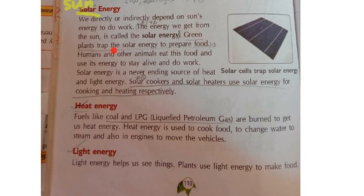Green plants trap the solar energy to prepare food. All the green plants will need the sun's energy for preparing food. Without sunlight, can they prepare food? No. Humans and other animals eat this food and use its energy to stay alive and do work. We need energy means what we should do? We should eat the food. What food will we be eating? All the leafy vegetables or vegetables - anything we eat, they come from the plants. So we are directly or indirectly depending upon the sun's energy.